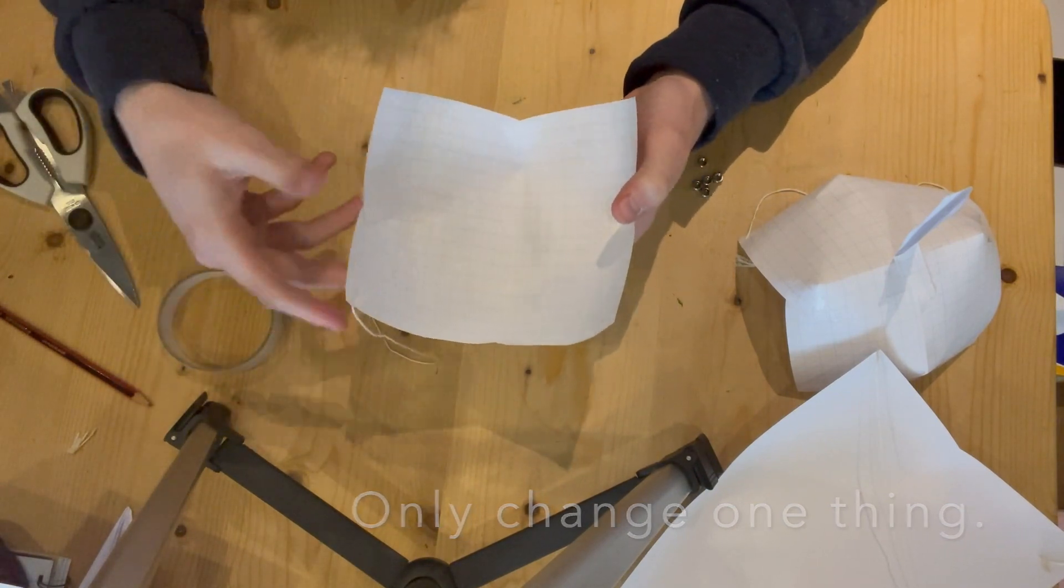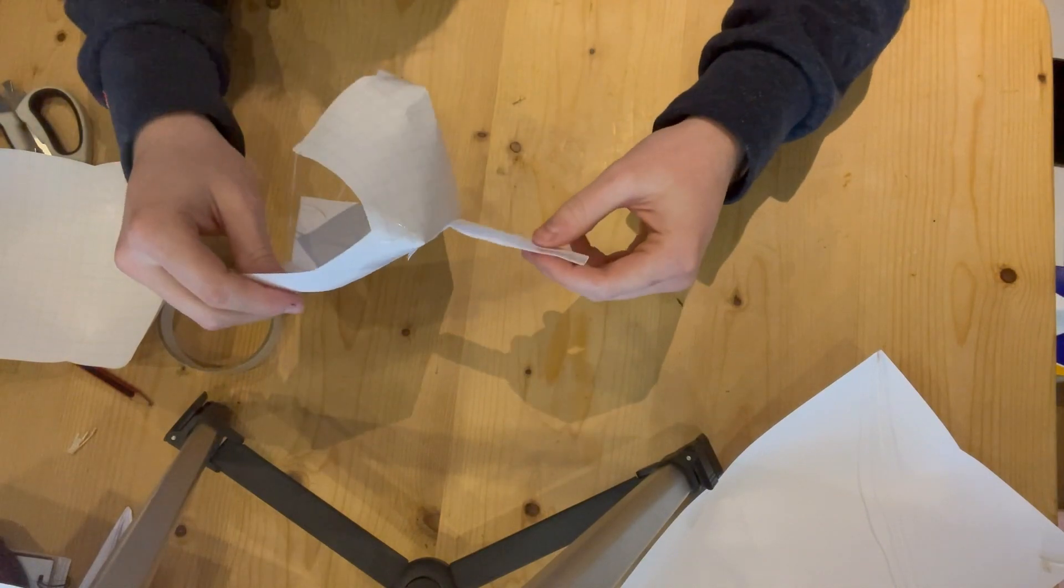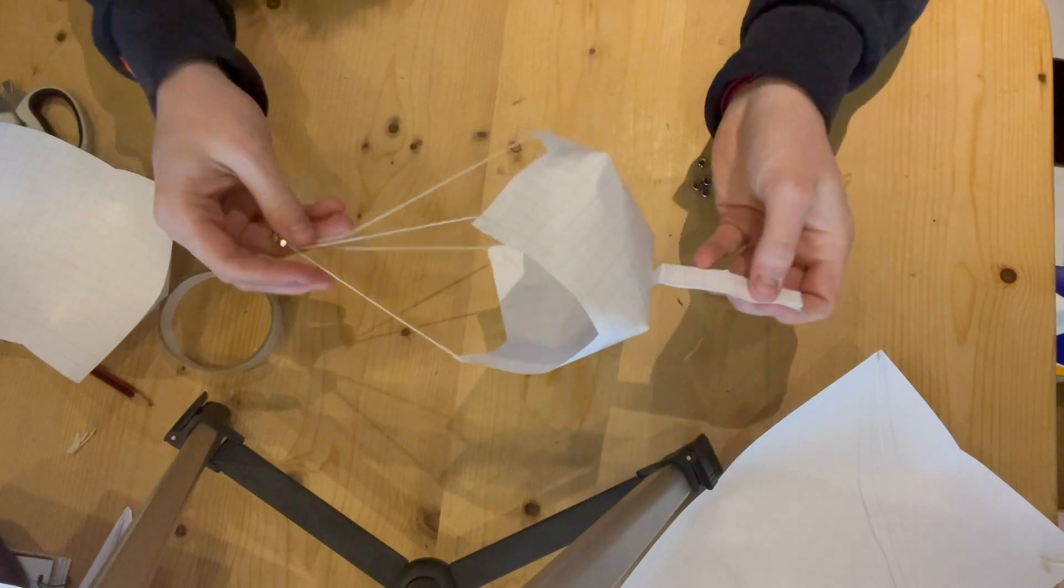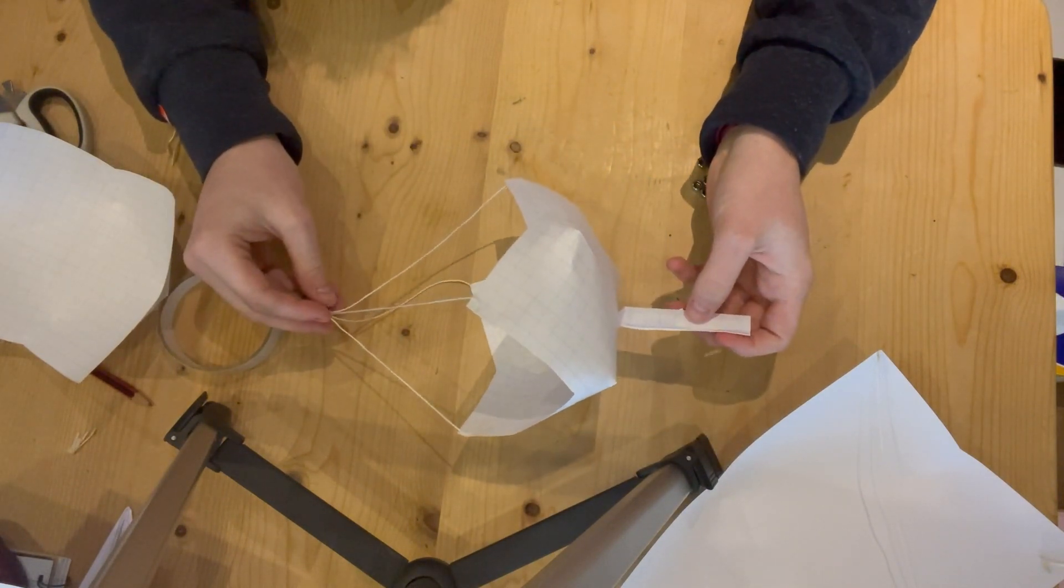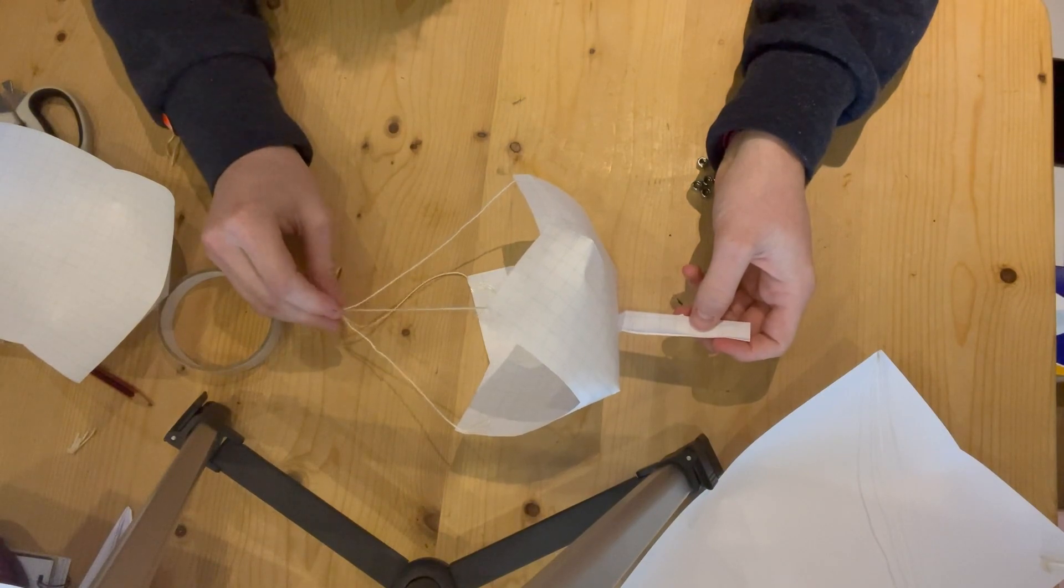After you've done all that the only other thing you may want to add is a handle to the top which is just a spare piece of paper that's attached just so you can easily drop it. Once you've got your few designs ready to test you can go and find a nice high space and test the timing it takes for each one.